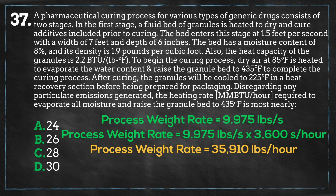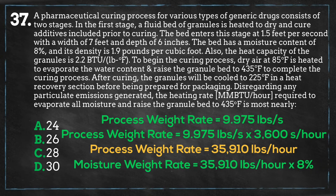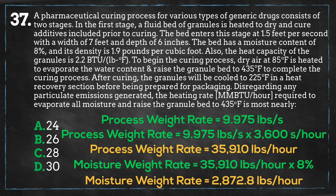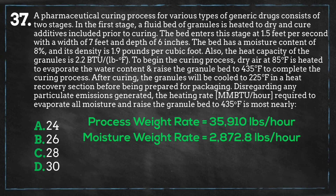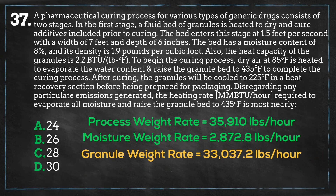The moisture content is 8%, so 8% of this hourly rate equals 2,872.8 pounds per hour for the water content of the bed. The balance, which is 33,037 pounds per hour, is the rate of granules going through the curing process.